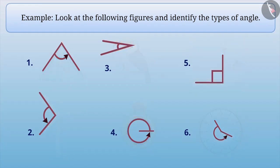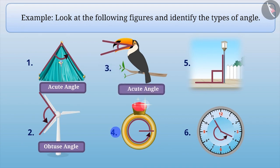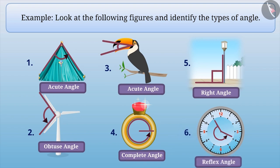Following angles are represented in given figures. In the first figure, it is an acute angle. In the second, an obtuse. In the third, an acute. In the fourth, a complete angle. The fifth is a right angle. And the sixth is a reflex angle.